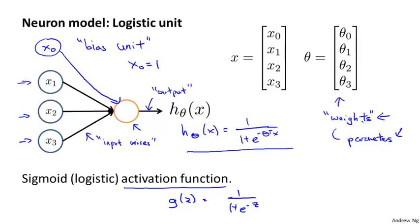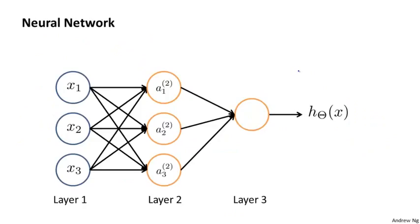So, this little diagram represents a single neuron. What a neural network is, is just a group of these different neurons strung together. Concretely, here we have input units x1, x2, x3. And once again, sometimes we can draw this extra node, x0, and sometimes not. So, just throw that in here.